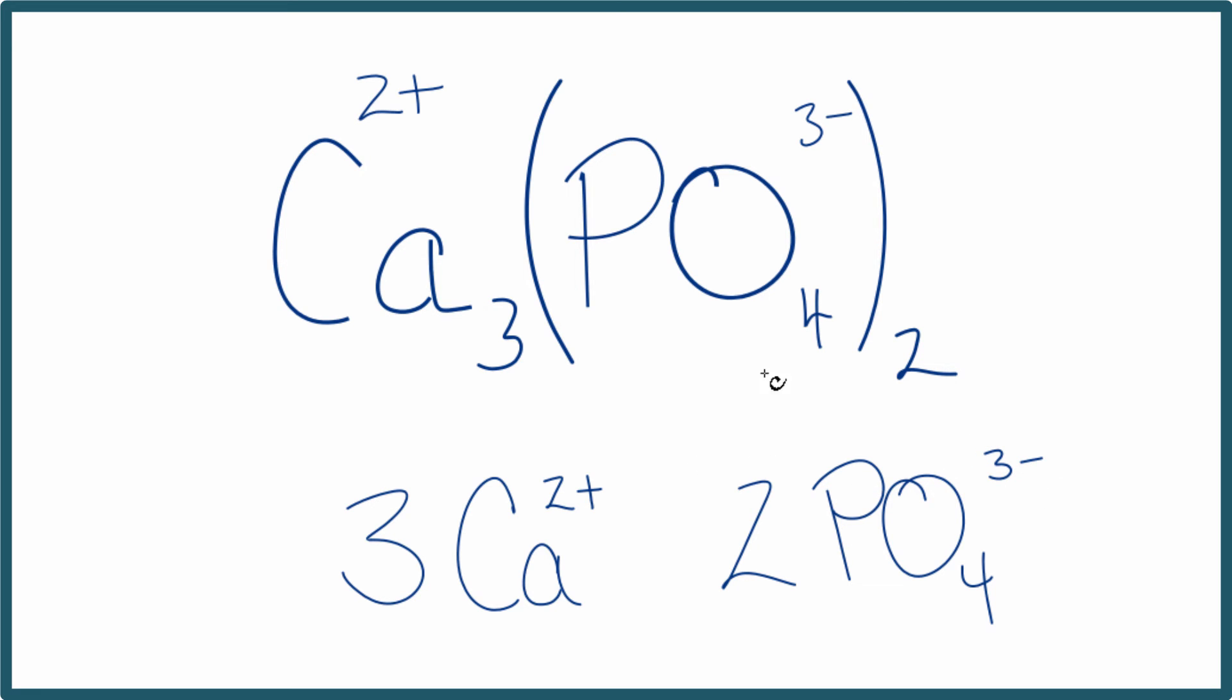So if you want to count up the ions, the total ions in Ca₃(PO₄)₂, calcium phosphate, you have three calcium ions and two phosphate ions. So a total of five ions in each formula unit of calcium phosphate.